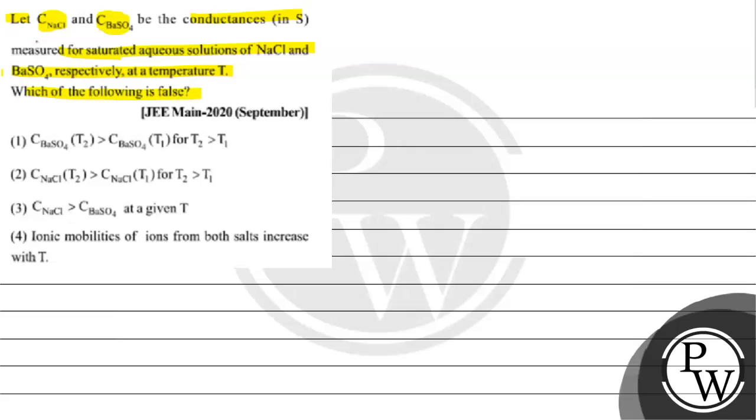Option 1 is given as conductance of BaSO4 at temperature T2 is greater than conductance of BaSO4 at temperature T1 for T2 is greater than T1.